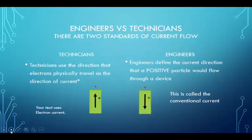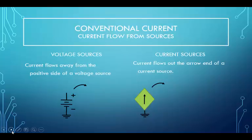There are two standards of current flow, one for engineers and one for technicians. Technicians use the directions that currents physically travel as the direction of current — this is called electron current. Engineers define the current direction that a positive particle flows throughout a device or circuit — this is called conventional current. Conventional current from sources will be in a direction out of the source, so conventional current from a voltage source will flow out of the positive terminal. Conventional current out of a current source will flow out of the arrow end of the current source.